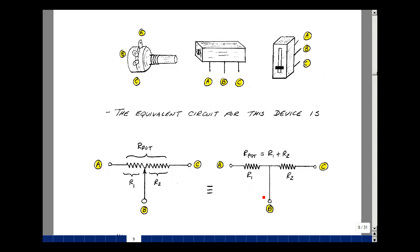This is going to be depending on where you are rotating the shaft or the set screw or the slide switch. But your total resistance is just R1 plus R2.